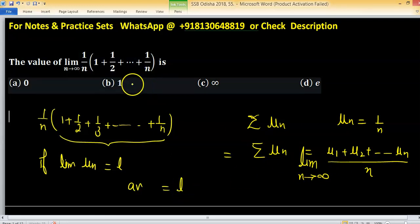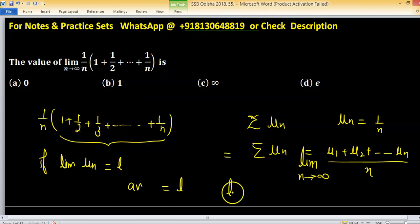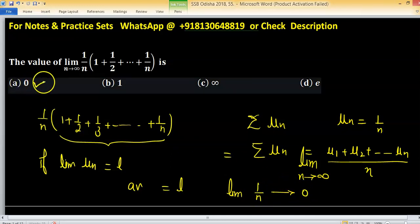So this limit is equals to limit of 1 upon n, and this is 0. So option a is the right one.